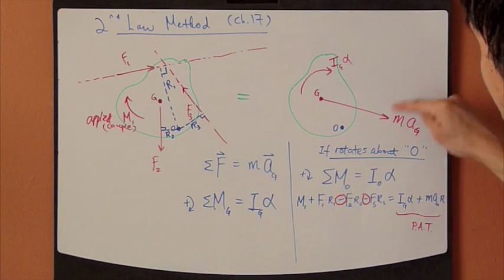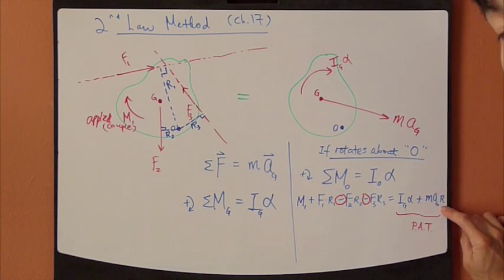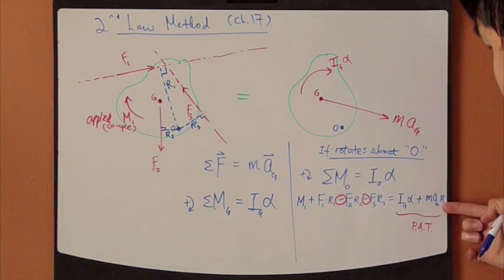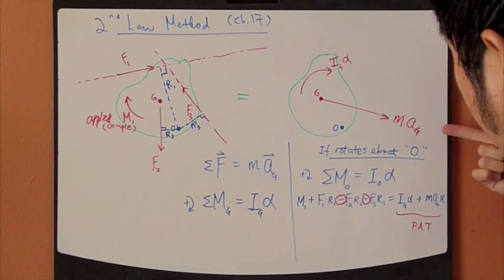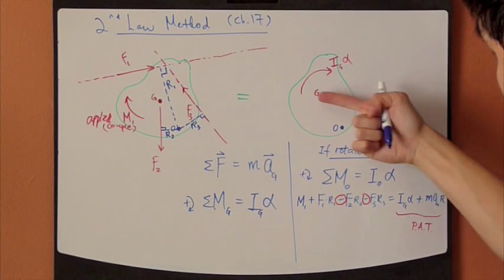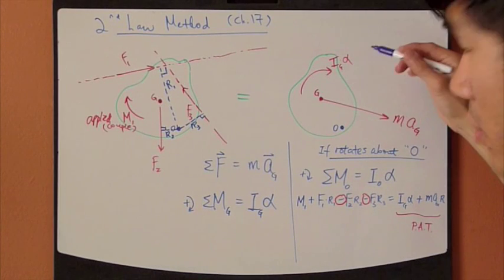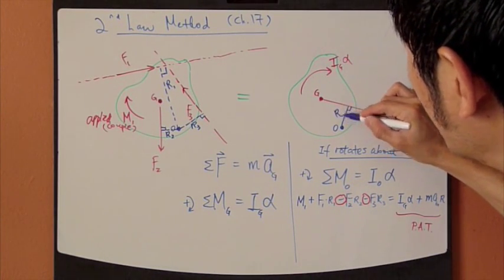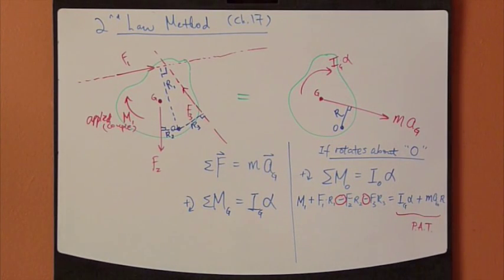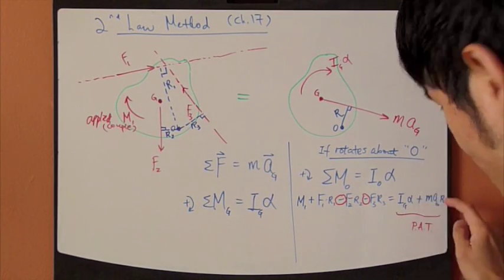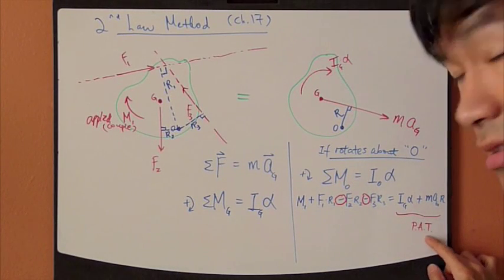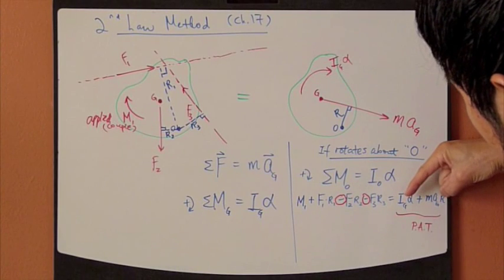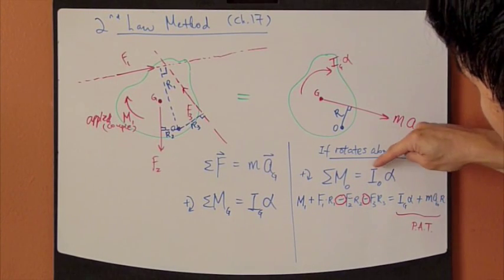ma, which is this term, times r, where r is the shortest distance between this ma factor and point O, which is right here. So that's my r. And this is derived from parallel axis theorem. So these two terms exactly go to this guy right here.